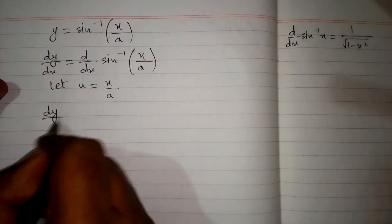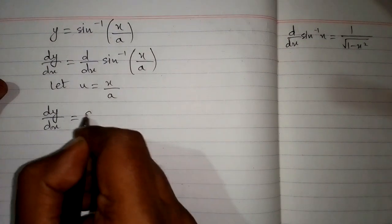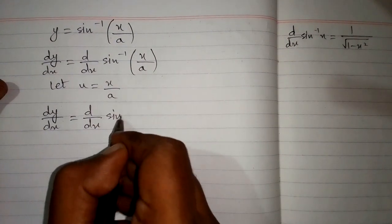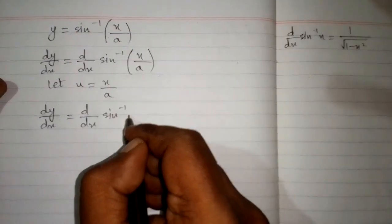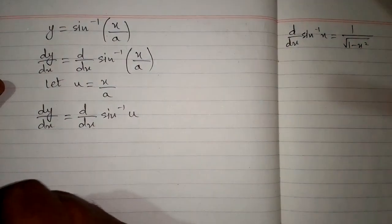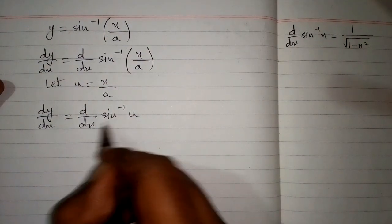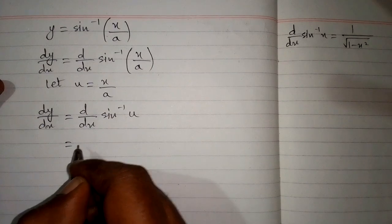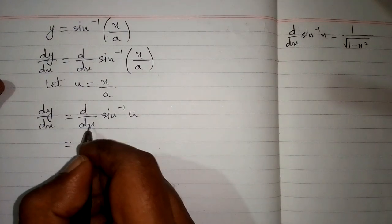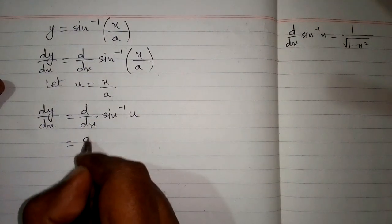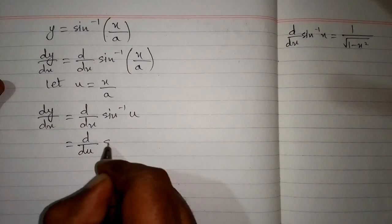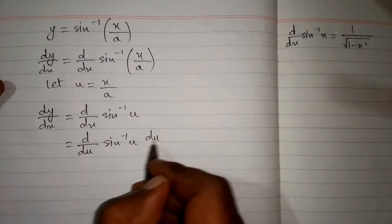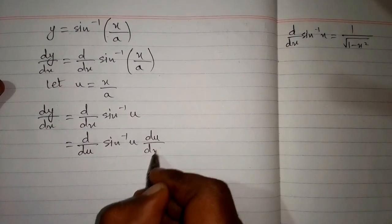So we have dy by dx is equal to d by dx of inverse sine of u. Now these two variables are different, so we will apply the chain rule and replace dx by du. So we have dy by du of inverse sine of u multiplied by du by dx.